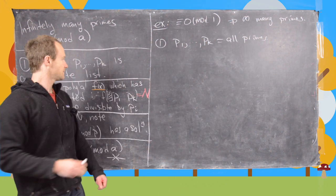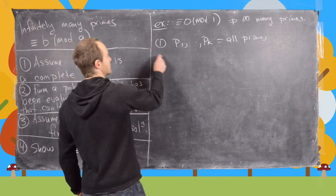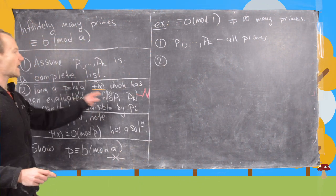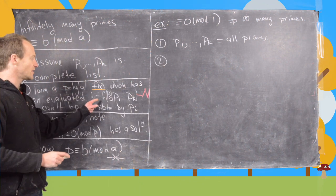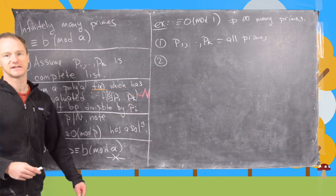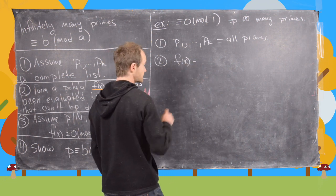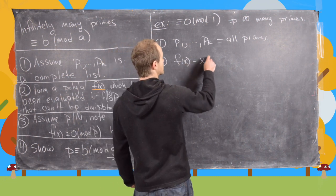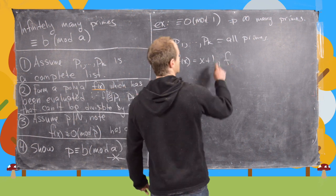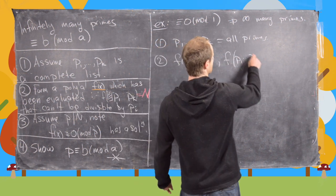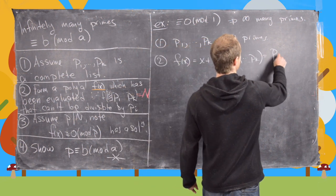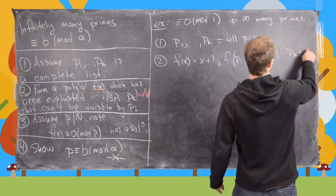And then step number two is you want to form a polynomial that's been evaluated at some number times this product and in this case the polynomial is just going to be f of x equals x plus one and then we're going to look at f of this product. So that's going to be p1 up to pk plus one.